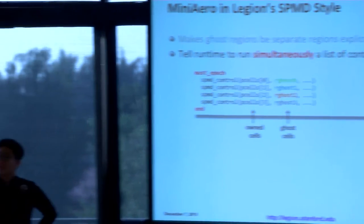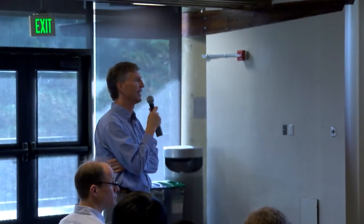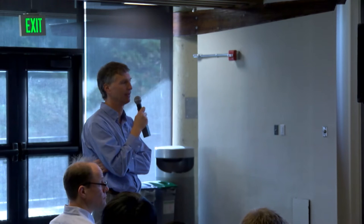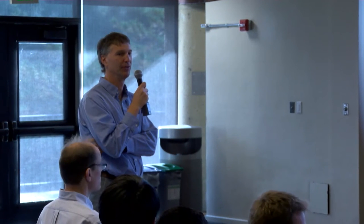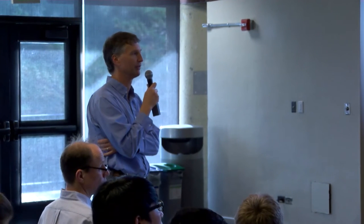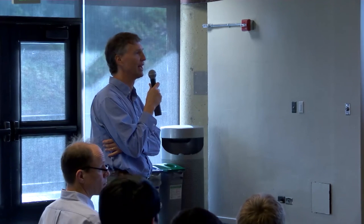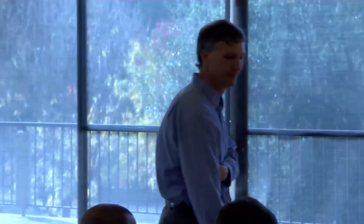The reason for the must epoch is that those tasks don't just run in parallel — they have to run in parallel. If they're going to communicate with each other, you could get deadlocks if one task wasn't actually running. So this is a requirement on the runtime system: it will not launch those tasks unless it can launch all of them at the same time. It's a functional correctness specification — you need to guarantee that these tasks run simultaneously.